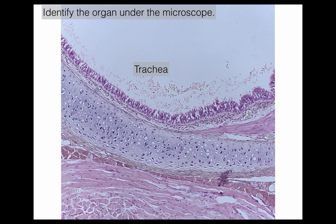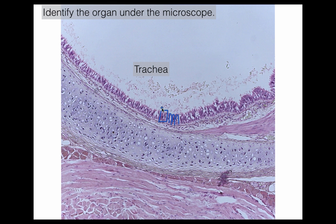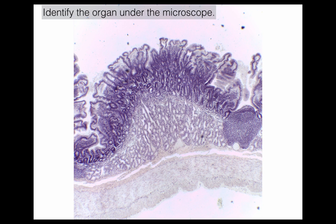This is the trachea, and there are two things that make it very obviously the trachea. The first is the pseudostratified ciliated columnar epithelium (PSCC) that you see here — it's got cilia on the top. The second, if you remember from Unit 1, is the hyaline cartilage here, which is the tracheal ring that supports the structure and keeps it open. Back here we have the trachealis muscle.